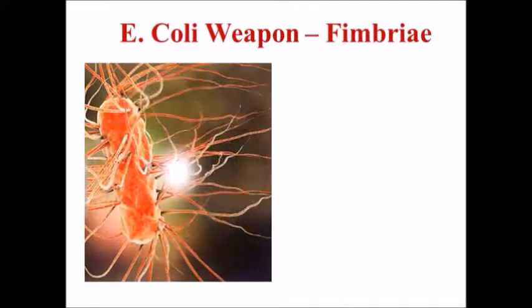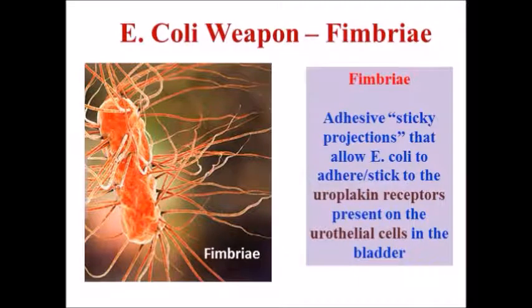Now let us review the role of cranberry extract. To understand this, we need to know what happens in urinary tract infections. UTIs are caused by pathogens like E. coli, which causes infections with the help of fimbria — hair-like structures present on E. coli cells. With the help of these fimbria, the bacteria is able to attach to uroepithelial walls. Fimbria are adhesive, sticky projections that allow E. coli to adhere to uroplakin receptors present on uroepithelial cells in the bladder.